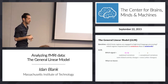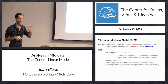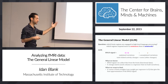We know the BOLD signal — that's something we collect from the brain and give to the GLM. We know the design matrix — we build it based on our experiment. These are the two things we give the GLM. What we want to find, what the GLM gives back to us, is the vector of beta weights — a beta weight for each predictor — that gives the best approximation.